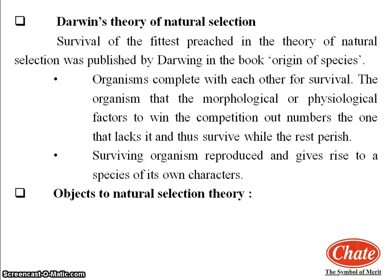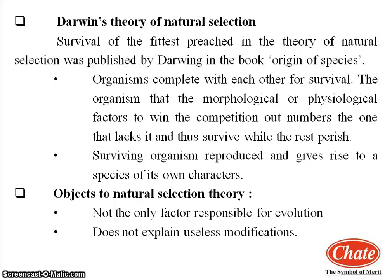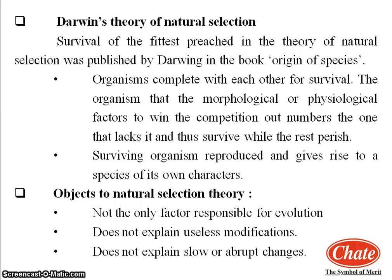We will see some objections raised against Darwin's theory of natural selection. The main objections are: first, natural selection is not the only factor responsible for evolution. Second, Darwin did not mention any explanation about useful and useless modifications. The third objection is there is no explanation about slow changes and abrupt changes — meaning sudden changes. These are the three objections raised against Darwin's theory of natural selection.